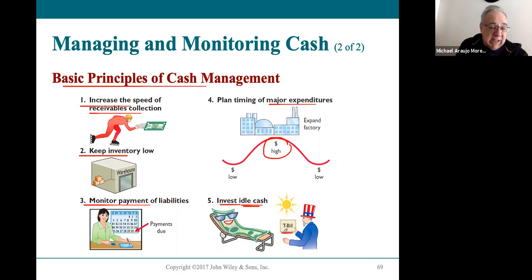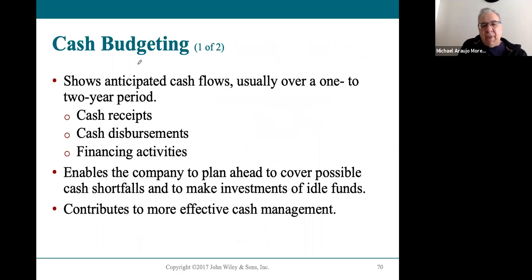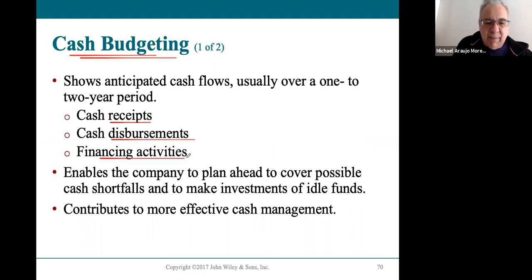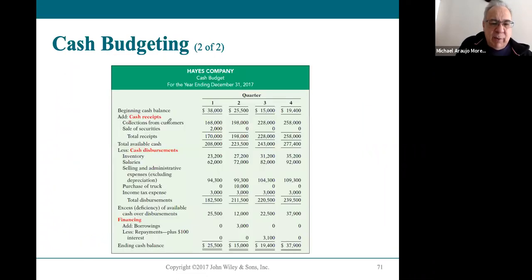You should never have idle cash sitting around — always do everything you can to invest it and earn interest. That leads us to cash budgeting, which looks at three things: how much cash is coming in (cash receipts), how much needs to go out (cash disbursements), and if more is going out than coming in, financing activities to obtain the needed cash.